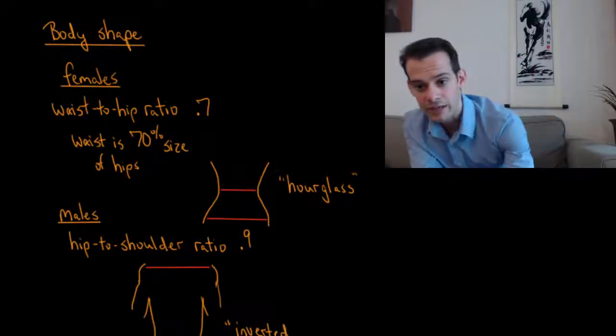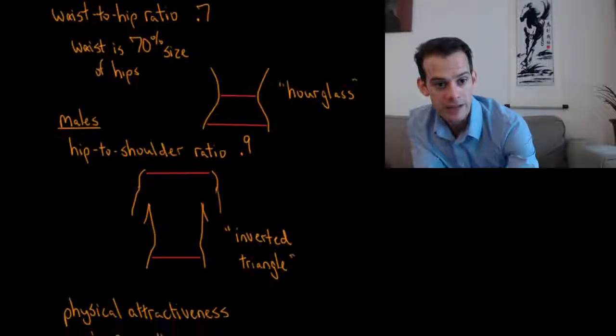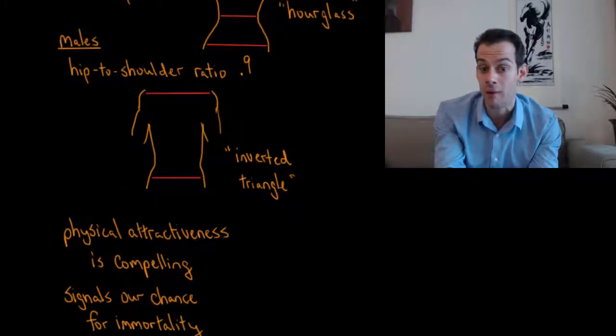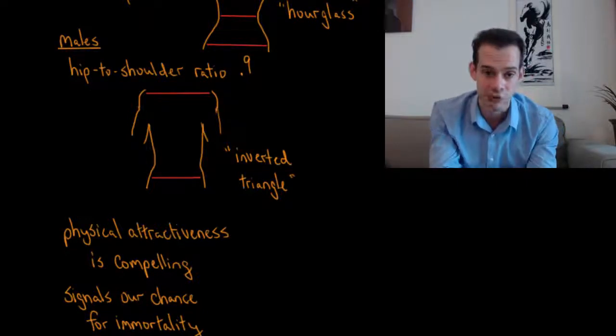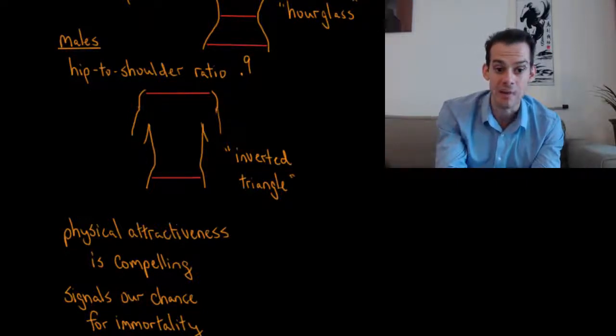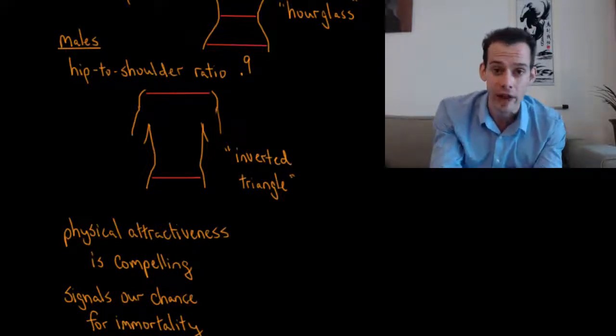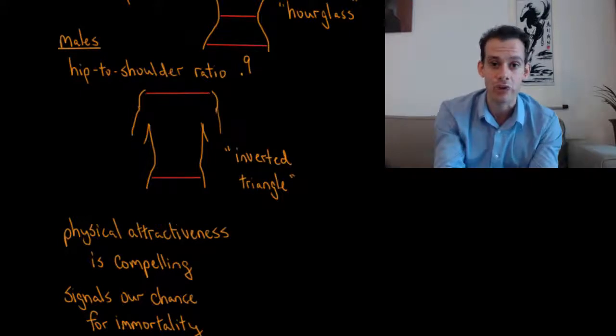In males, however, the ratio that seems to be more important is what's called the hip to shoulder ratio. And in males, a hip to shoulder ratio of about 0.9 is considered to be attractive. And so this is the case where the hips are about 90% of the width of the shoulders. And this is often referred to as the inverted triangle shape, broad shoulders down to a narrower waist.